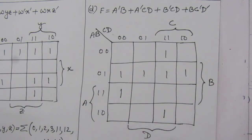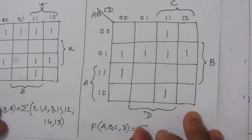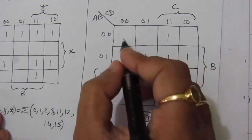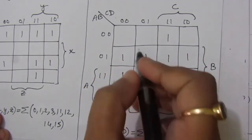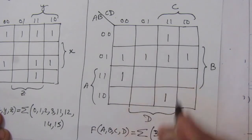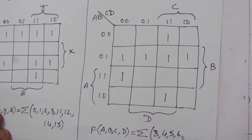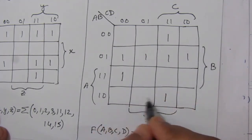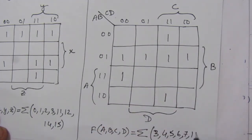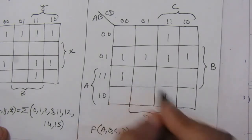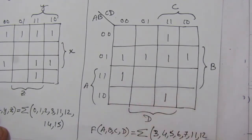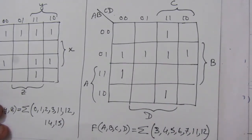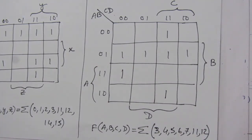For b c bar d bar: c bar d bar is this first column, and b is the second and third rows, so we put a one there. The sum of minterms expression is sum of 0, 1, 2, 3, 4, 5, 6, 7, 8, 9, 10, 11, 12, 13, 14, and 15. Thank you for watching. If you have any questions, please put them in the comment section below. Also like, share, and subscribe to my channel.